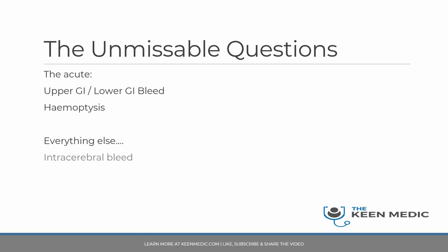And there's everything else, like intracerebral bleed. You will deal with this quite often as a medical registrar, but you will not deal with it really in the Paces scenario, which is why I've put it down here. But of course, it is very much a condition that can kill someone, so you always have to be thinking about it. If a patient has got anemia and they are confused or have lost consciousness, always be wary of this.